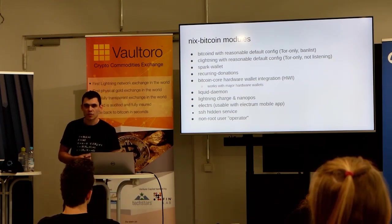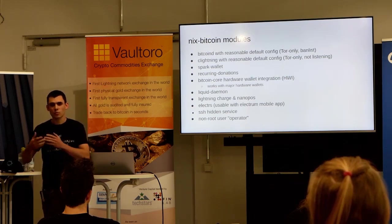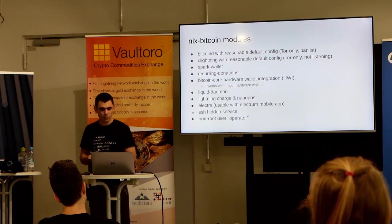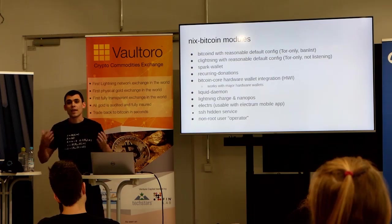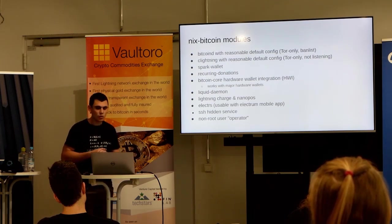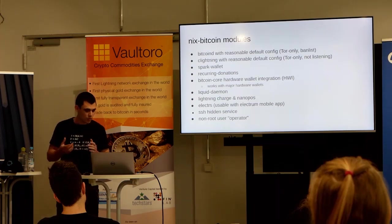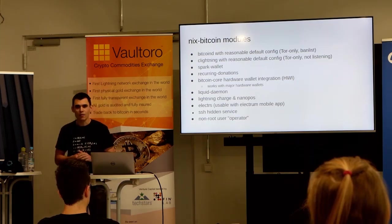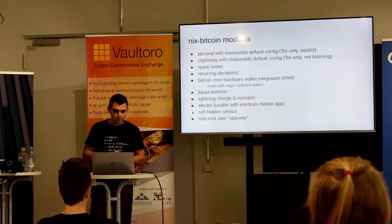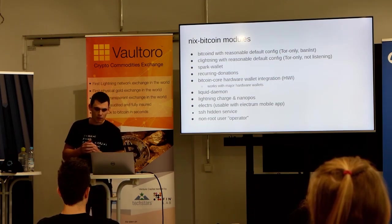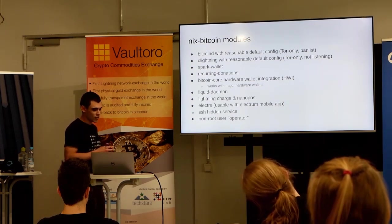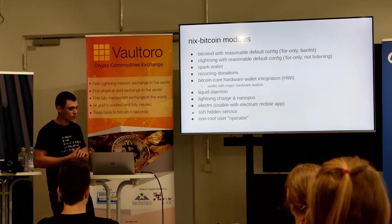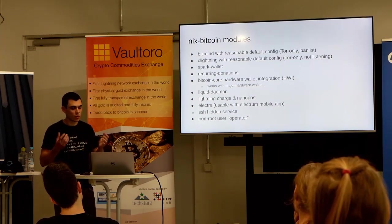There's also Spark Wallet, which allows you to use your CLightning node with your mobile wallet. There's a recurring donations module. And now with the latest Bitcoin Core release, you can use hardware wallets with Bitcoin Core — this works with most major hardware wallets; it's a little bit cumbersome right now but it's still my favorite way to use hardware wallets. You can enable the Liquid daemon, which allows you to use Blockstream's sidechain, send coins there, use it with confidential transactions, assets, whatever you want to do.